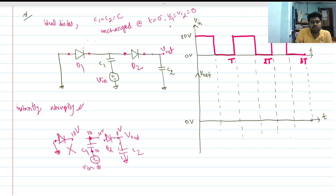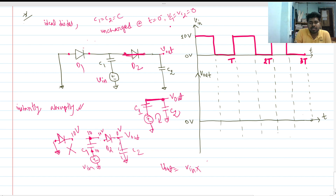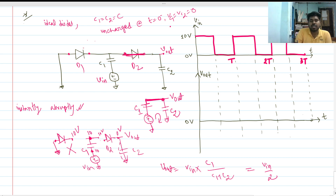At t equals zero, since D2 conducts, the circuit picture shows the input connected to C1 and C2 in series, with no voltage drop across the ideal diode. Both C1 and C2 are connected in series with a constant voltage source. The output voltage Vout follows a voltage division: Vout equals Vin times C1 divided by (C1 plus C2). Since C1 equals C2, this gives Vout equals half of Vin, which is 5 volts.